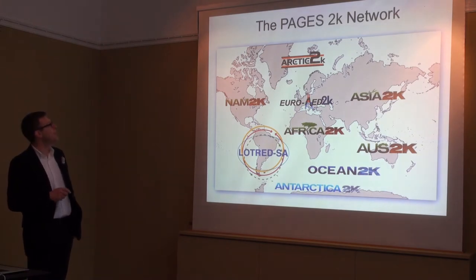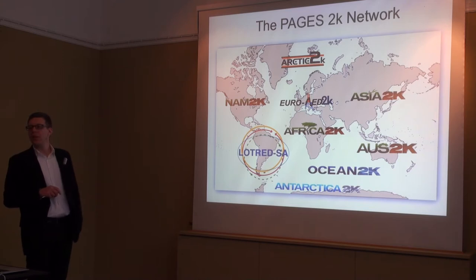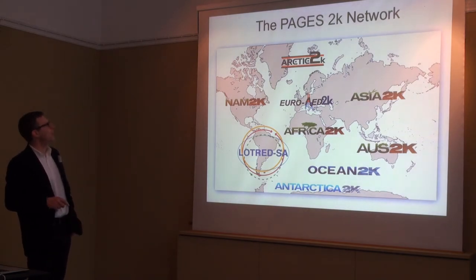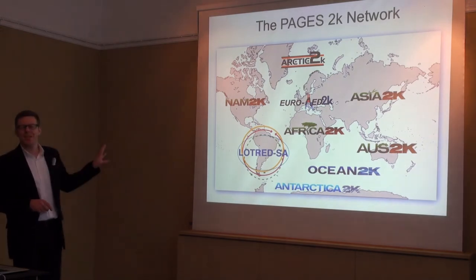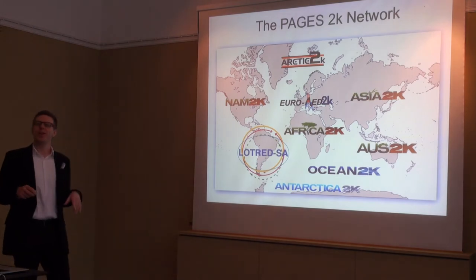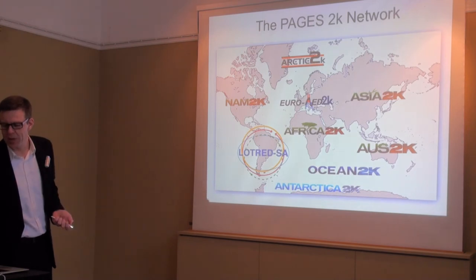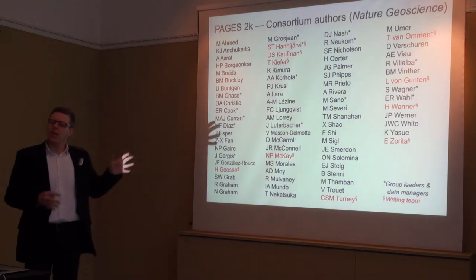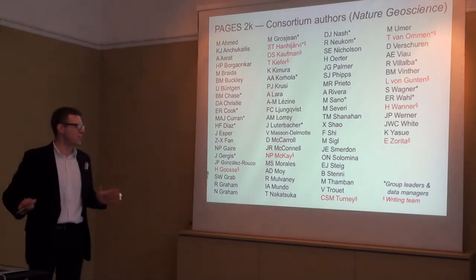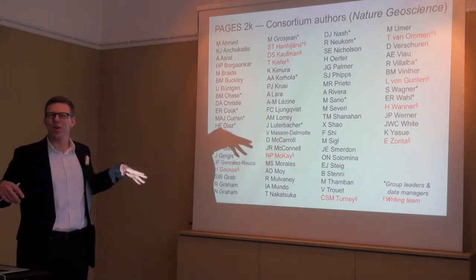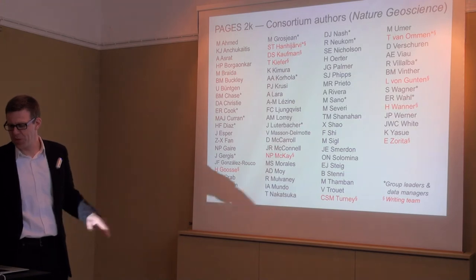That's why we established the Pages 2K network — a network of nine working groups in Pages. We coordinate and orchestrate them, although we leave them a lot of freedom, which you can see from their individual acronyms. Many of them are very individual. It does reflect the level of freedom each group has. Many people are involved — this is just the author list of a recent paper, which is an intermediate product. The project is ongoing, so there's more to come.